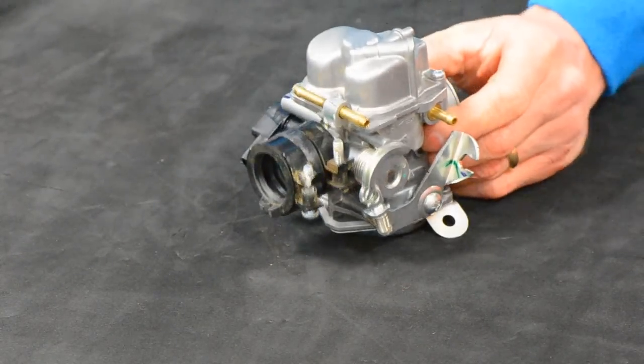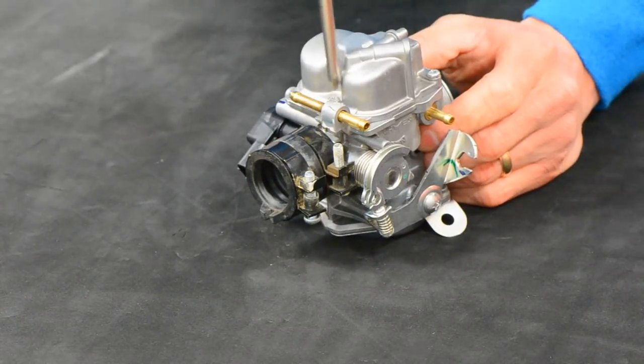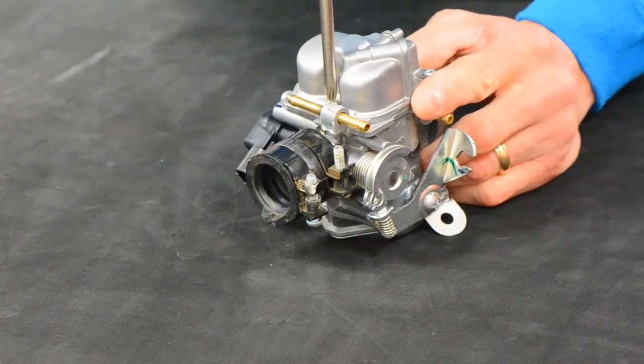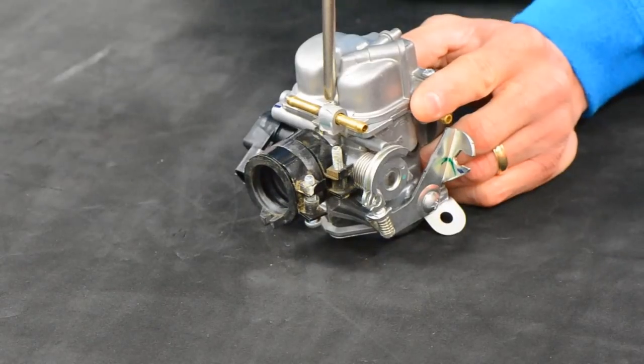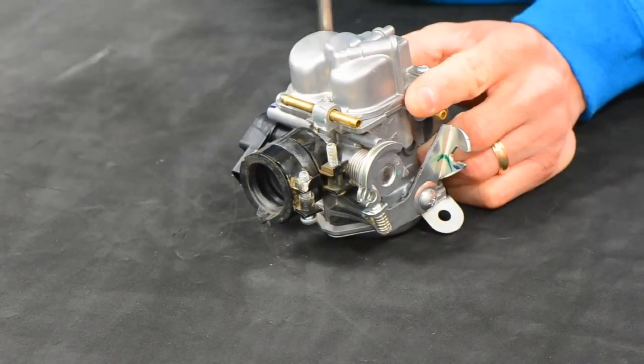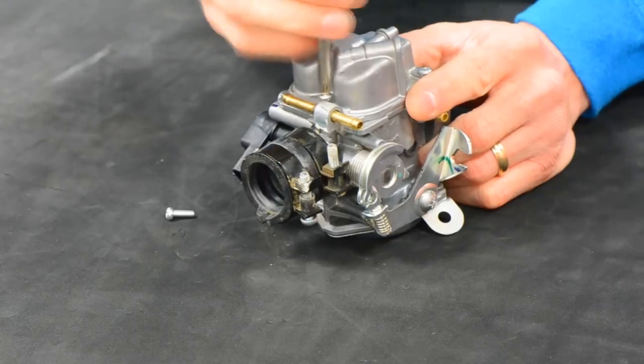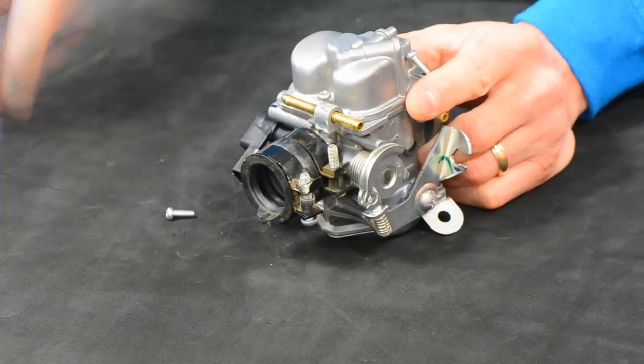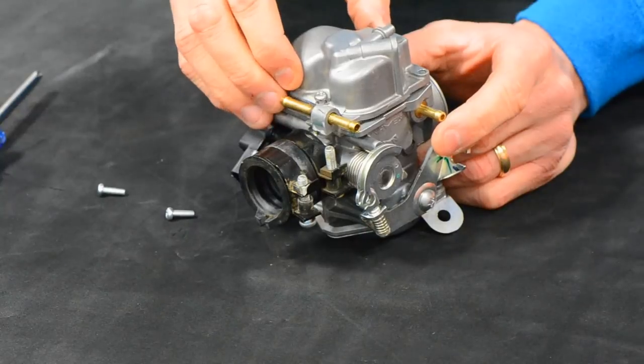With the carburetor drained, we'll turn it upside down. You have three bolts in the bottom of the float bowl. We're going to remove these. The float bowl will lift straight away.